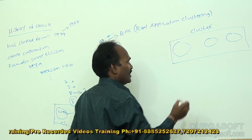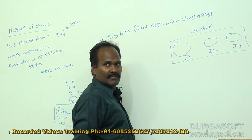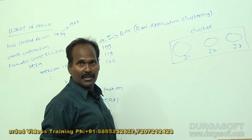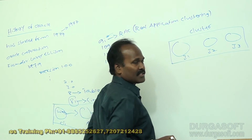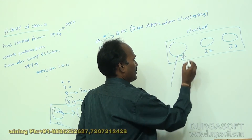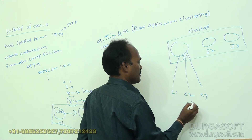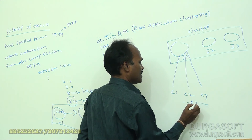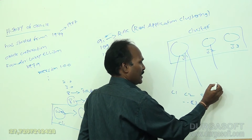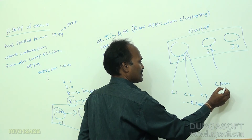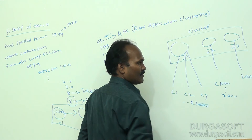In clustering technology, assume instance 1, instance 2, and instance 3 — a collection of many database engines. For instance 1, thousands of clients are connected (c1, c2, c3, etc.). For instance 2, also around 1000 to 2000 clients are connected, and for instance 3, around 1000 clients are connected.